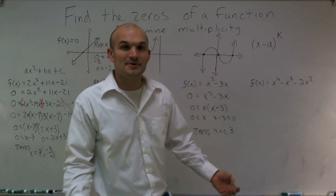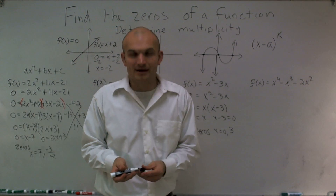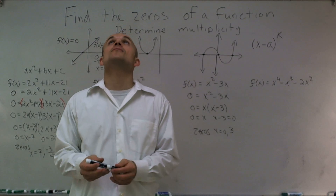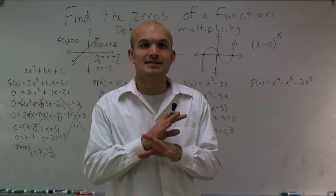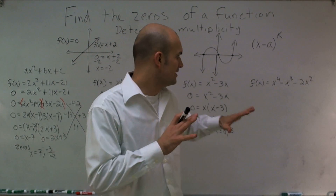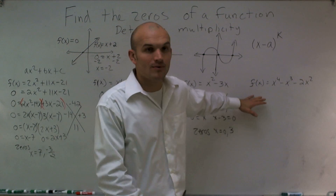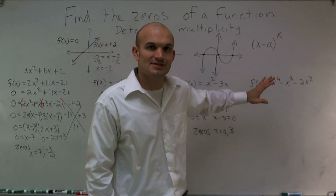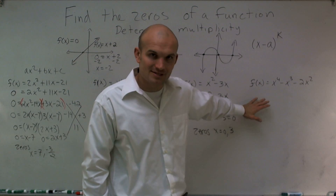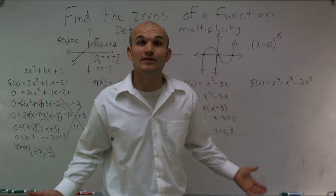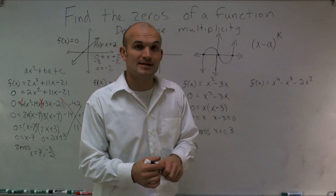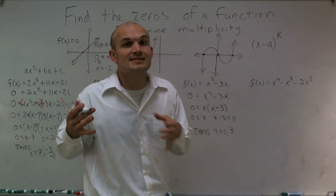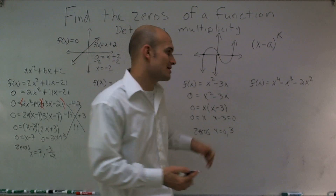The next one has x to the 4th — let's just set it equal to 0 and see what we can factor. I get x to the 4th minus x cubed minus 2x squared. They all share an x squared, so let's factor that out. Factoring out the x squared, I'm left with x squared times x squared minus x minus 2.